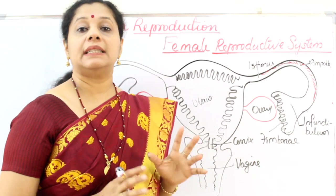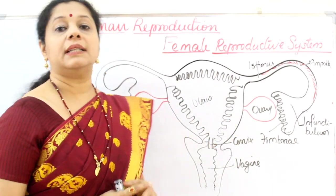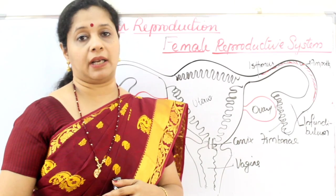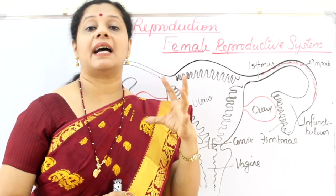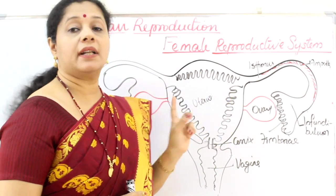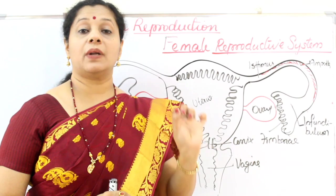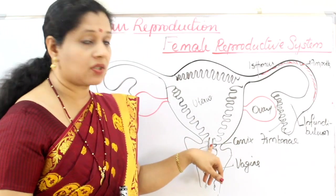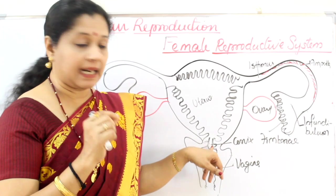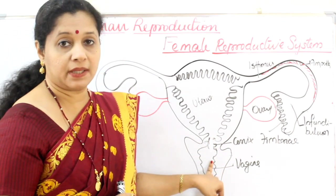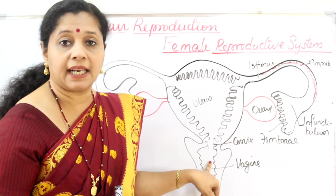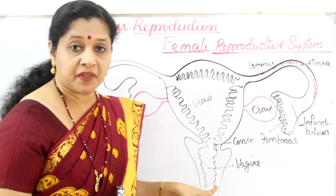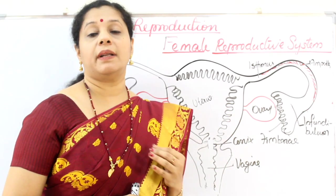The isthmus opens into the uterus, called the womb, where the baby develops. The uterine wall has three layers: the outer covering is the perimetrium, just inside that is the muscular myometrium which undergoes contraction and relaxation during childbirth, and the innermost layer is the endometrium where cyclical changes during the menstrual cycle occur and the endometrial lining is shed. The cervix, or neck of the uterus, leads to a narrow cervical canal opening into the vagina. The cervical canal and vagina together form the birth canal. Inside the vagina there are small foldings called rugae.